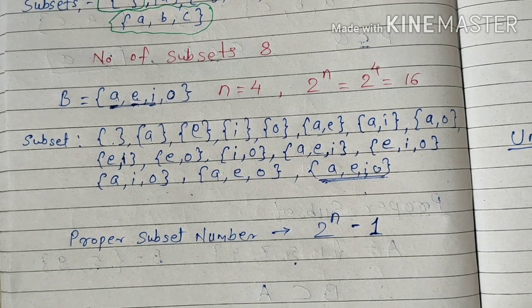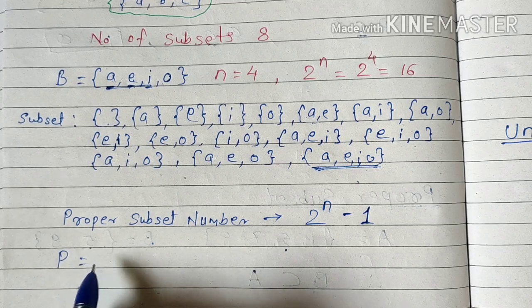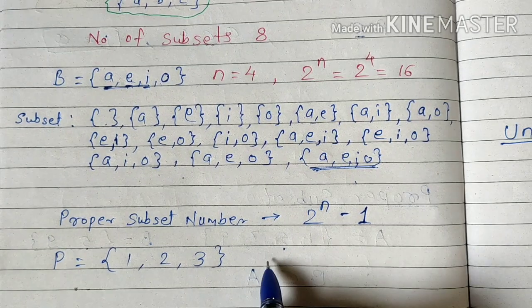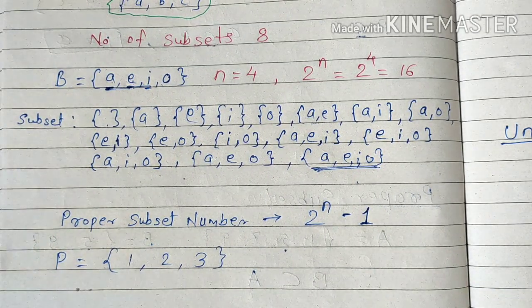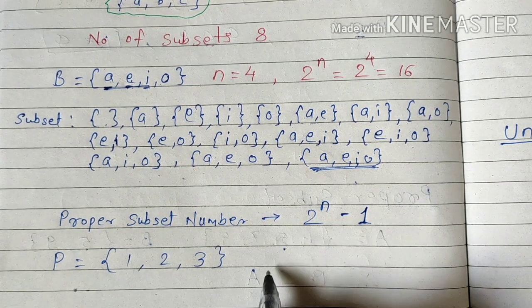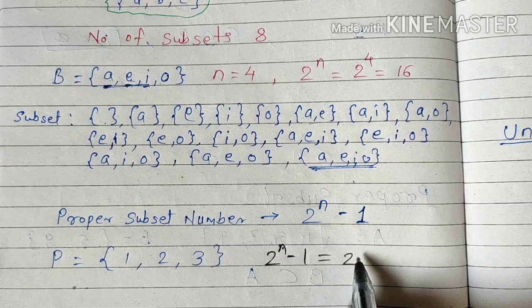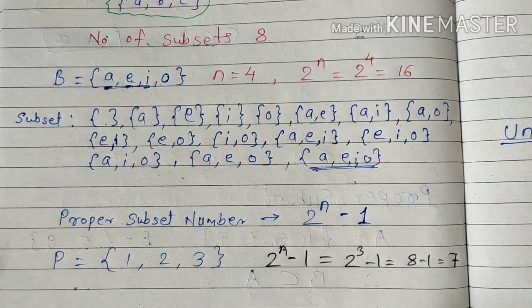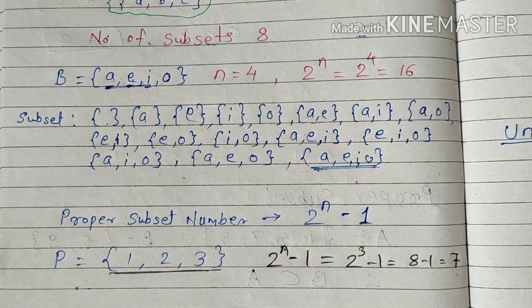Let us take one example. Suppose we have the element set P with elements {1, 2, 3}. How many elements are there? Three elements. So what will be the number of proper subsets? 2 raised to n minus 1, that is 2 raised to 3 minus 1, which is 8 minus 1, which is seven. That means this set will have seven proper subsets.